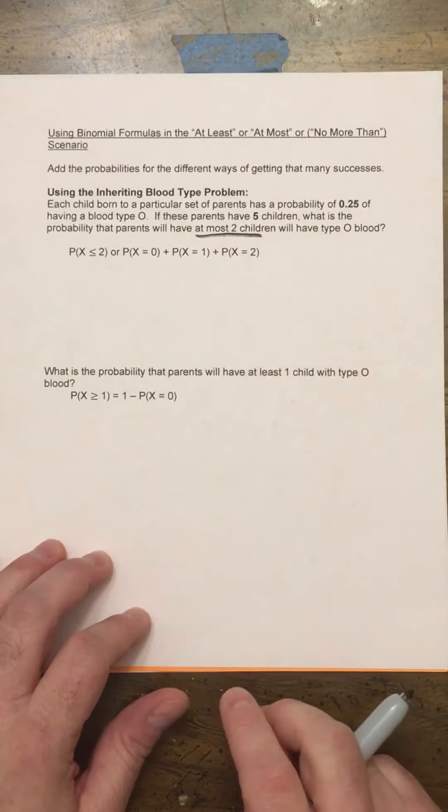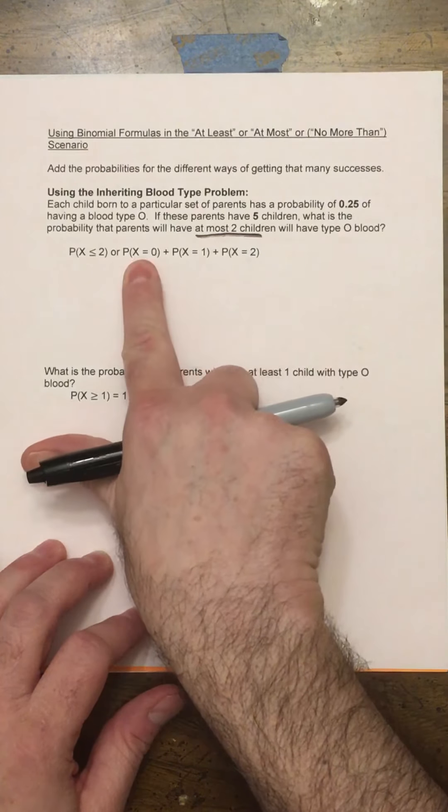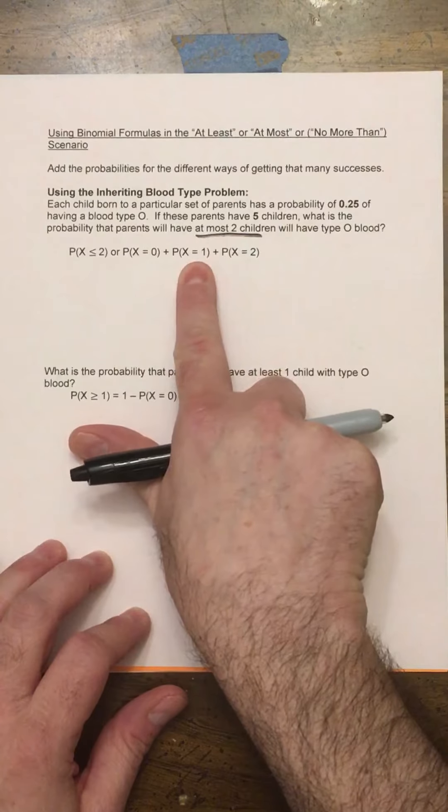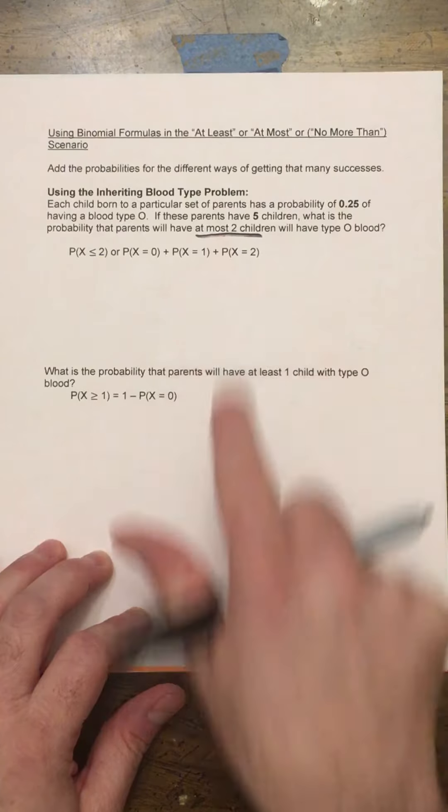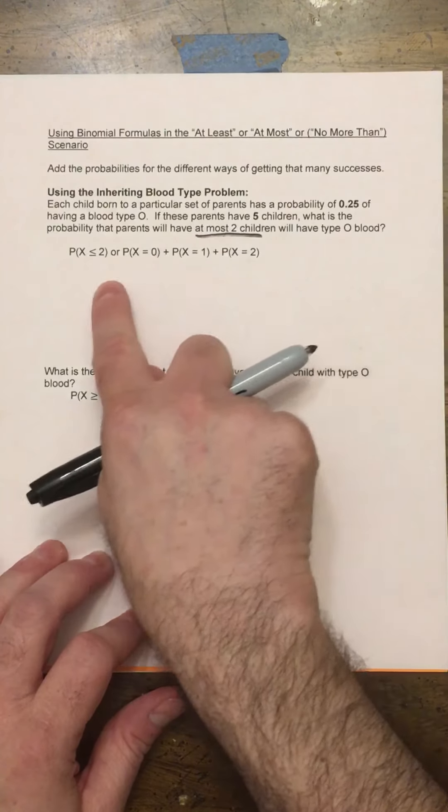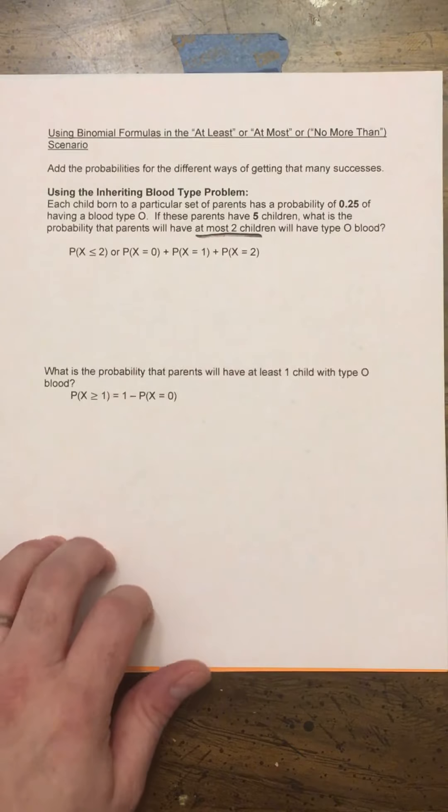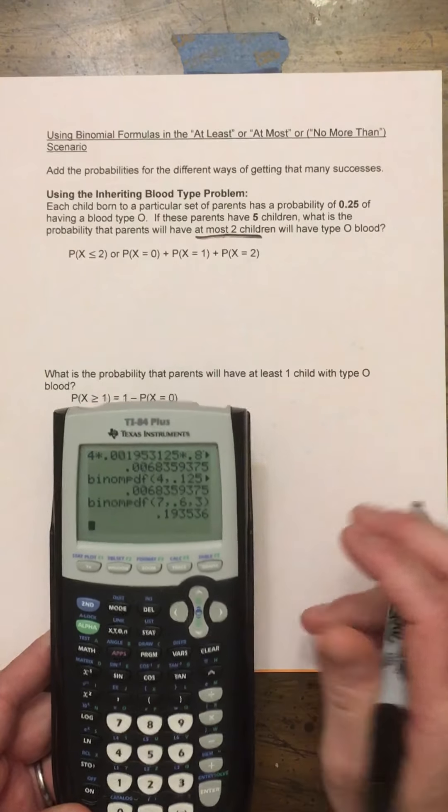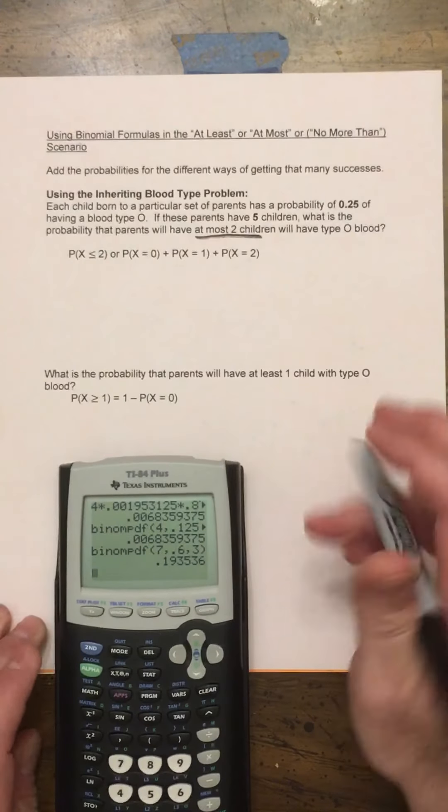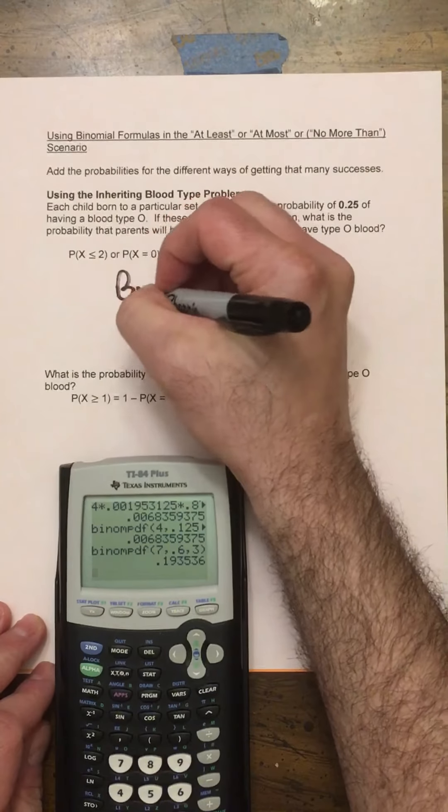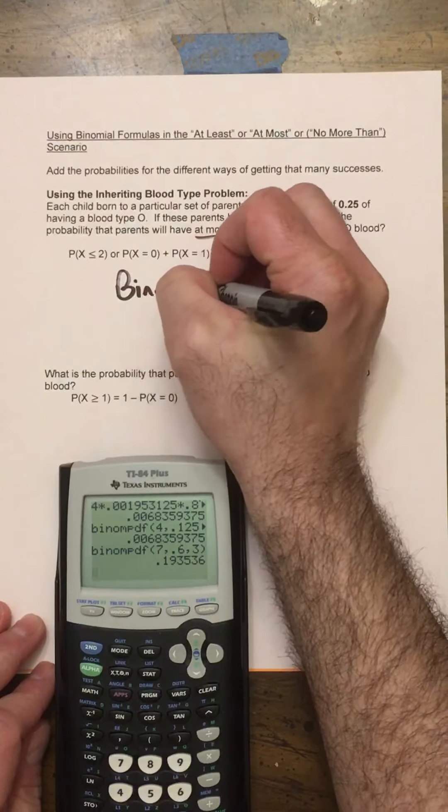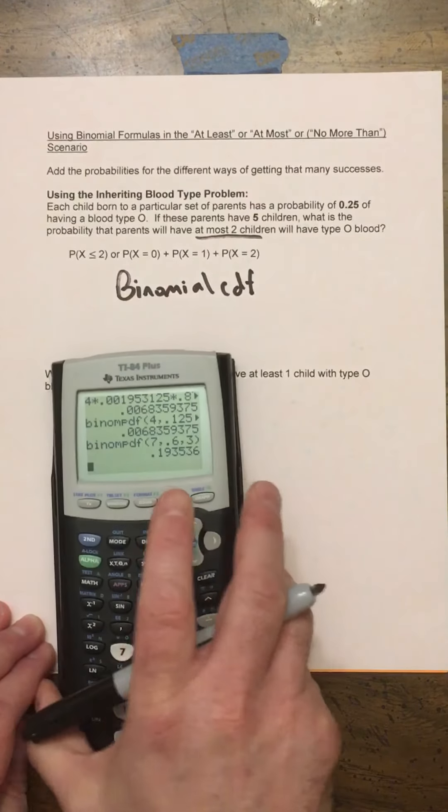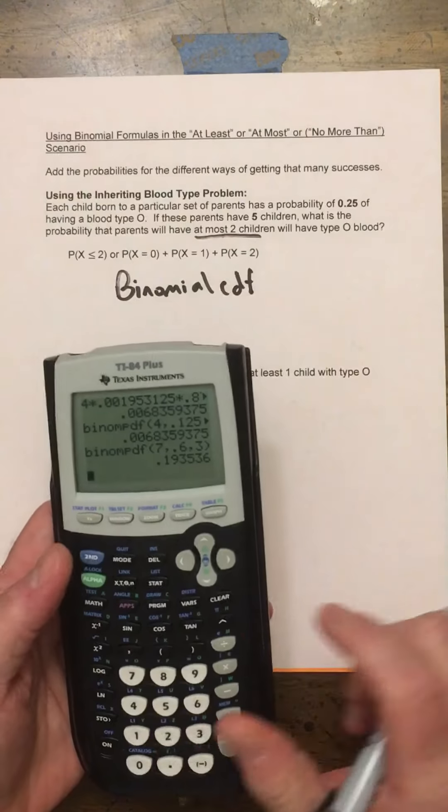So at most 2 children means having 0 children with blood type O, or plus 1 child with blood type O, or 2 children with blood type O. So you could actually literally do each of these separately and add those together, but I'll actually show you how you could use this new thing, the Binomial CDF.